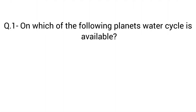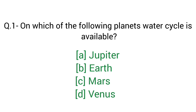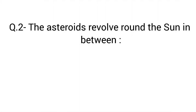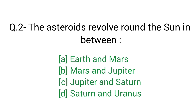Question number 1: On which of the following planets is the water cycle available? Right answer B — Earth. Question number 2: The asteroids revolve round the sun in between? Right answer B — Mars and Jupiter.